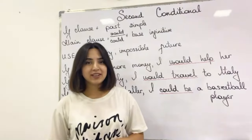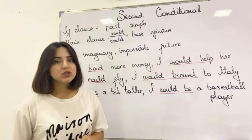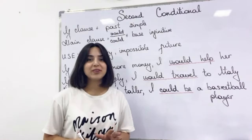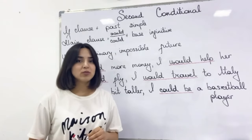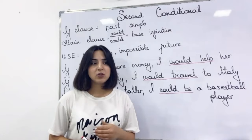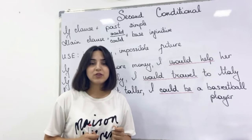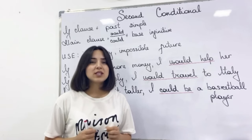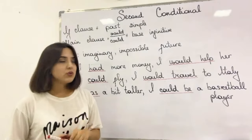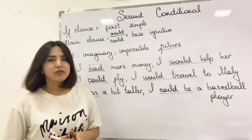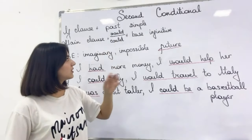Now it's time for second conditional. For the if clause, we should use past simple, not present simple. And in the main clause, we should use would plus base infinitive, or sometimes could plus base infinitive — both are possible. When should I use second conditional? If I speak about an imaginary or hypothetical situation in the future, or if I speak about something which sounds impossible to happen. That's why I have written 'imaginary' and 'impossible future'. I want to underline this because it might be a bit confusing for students, as they use past simple and past-like tenses of verbs. They mostly think it's about past — but no, it's about future. We use our imagination to think about the future.